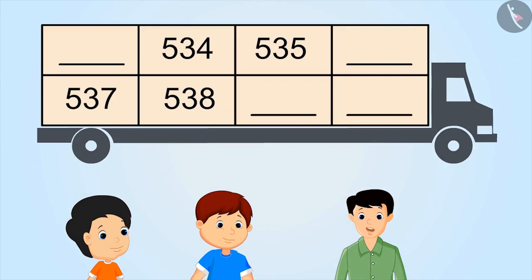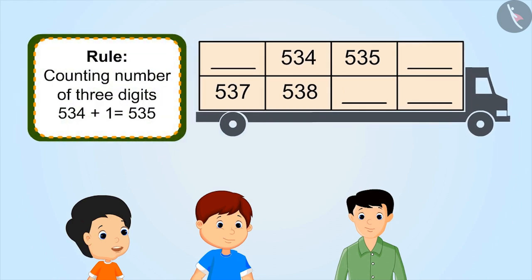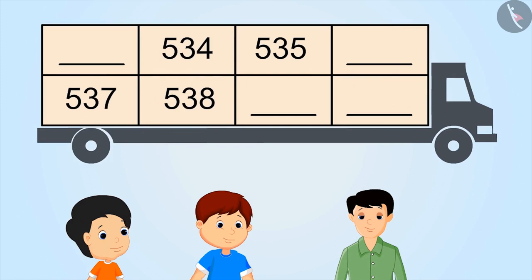Hmm, this is a three digit number: 534, 535. So the next one is 536. Right, but you have not filled the first one yet. Uncle, before 534 will come 534 minus 1, that is 533.